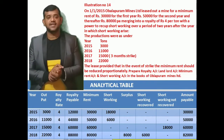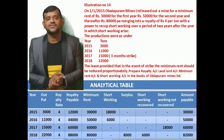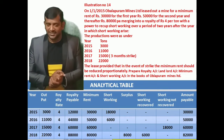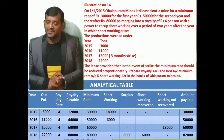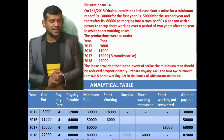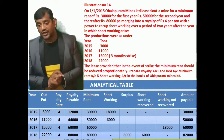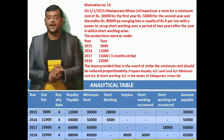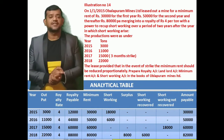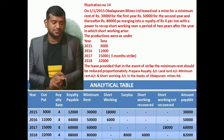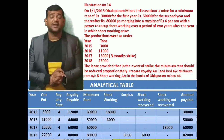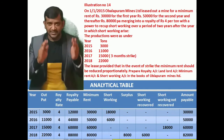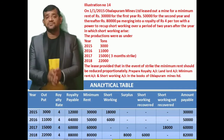Let us open the analytical table with 10 columns: year, output, royalty rate, royalty payable, minimum rent, short working, surplus, short working recovered, short working not recovered, and amount payable. These are the 10 columns which we are supposed to prepare while preparing the analytical table. So let us move towards the solution part.